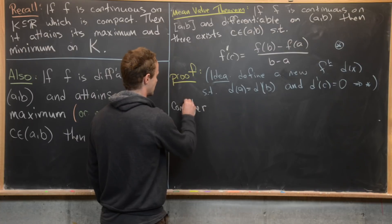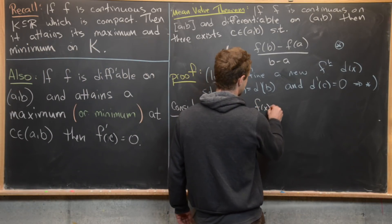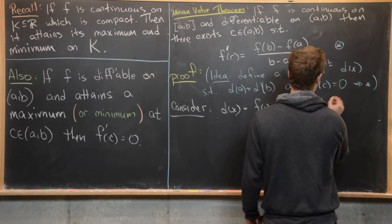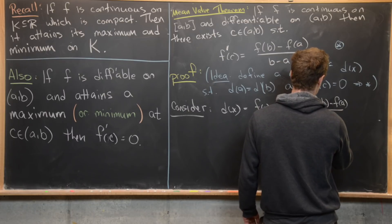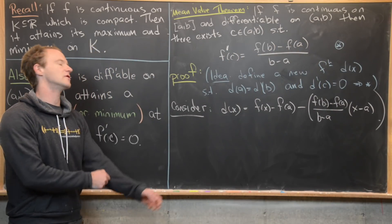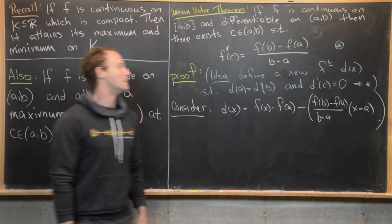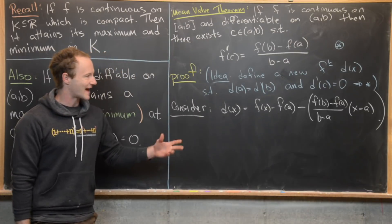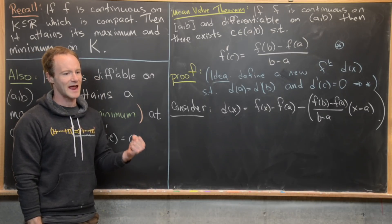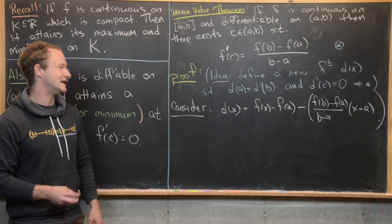Let's consider the following function: d of x equals F of x minus F of a, minus the quantity F of b minus F of a over b minus a, times x minus a. Algebraically, d of x is our original function F of x minus all of that extra stuff — and that extra stuff is exactly the equation of the secant line passing through the points (a, F(a)) and (b, F(b)). So d of x is the difference between F of x and the secant line.